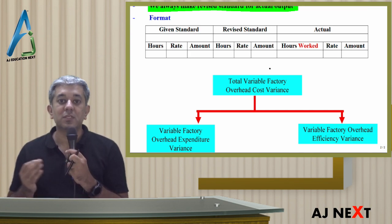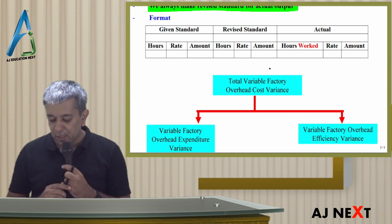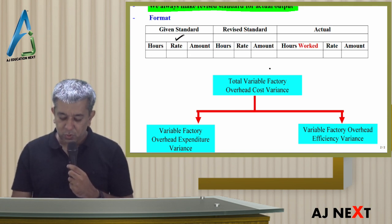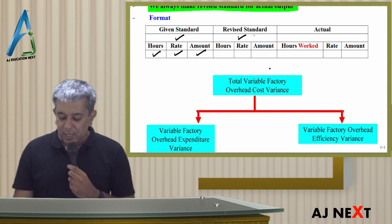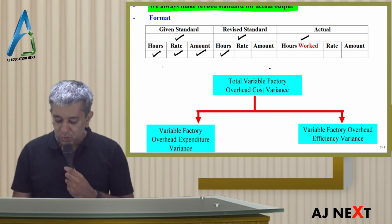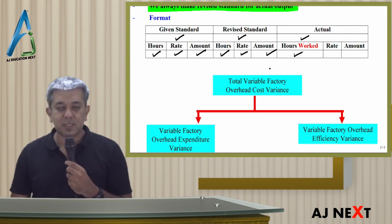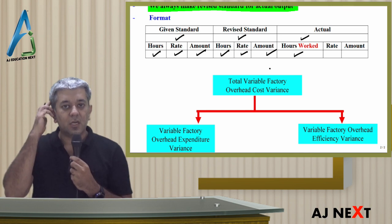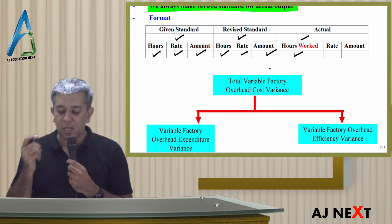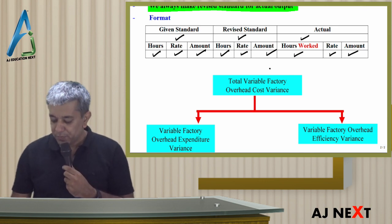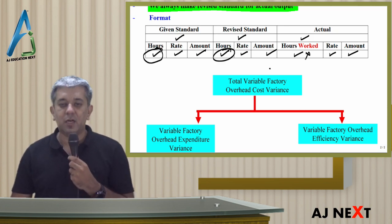Variable Factory Overheads means some expenses like electricity. Electricity is consumed when a worker is working, so worker hours will be the basis. So, given standard is for this level of output — how many hours should be taken — this will be copied from labor. Electricity rate per hour. Then the amount electricity should cost. In reality, how much output came — how many hours should have been taken — make Revised Standard accordingly. Rate per hour, then amount. Remember, workers' hours are not directly copied here, because in labor you had 'hours paid for,' but here it is 'hours worked' into rate, giving the amount. That one difference to keep from the labor format.